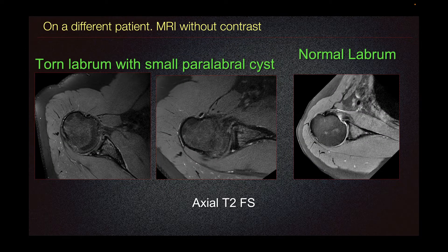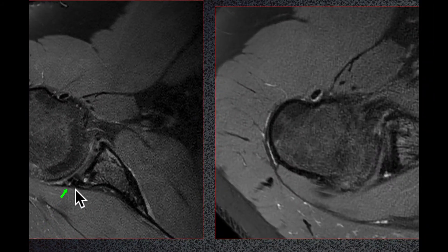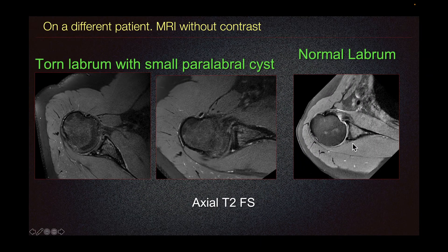On a different patient, MRI without contrast, we can see a torn labrum with small paralabral cyst here in the posterior labrum, as demonstrated by the increased signal within the posterior labrum, and here a small paralabral cyst. This is in comparison to the normal labrum on the right.